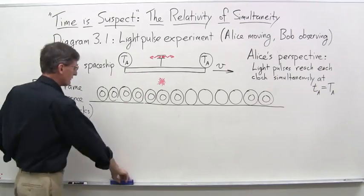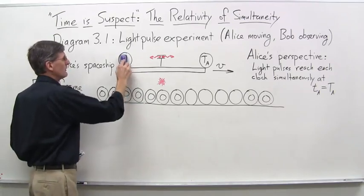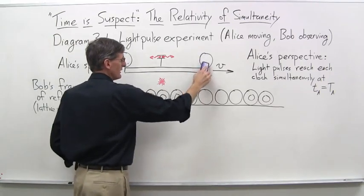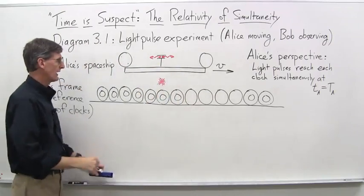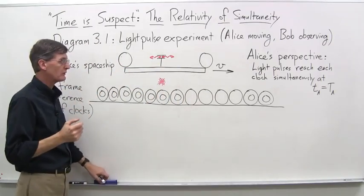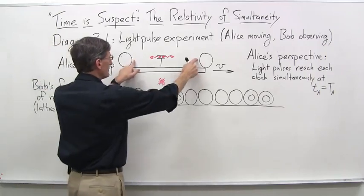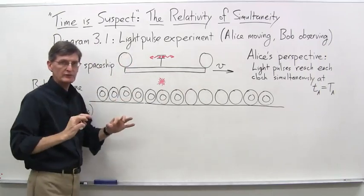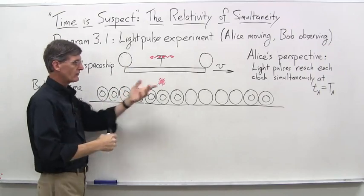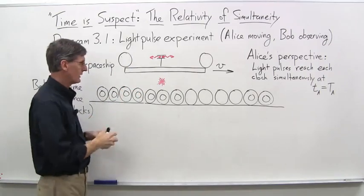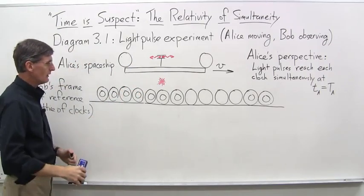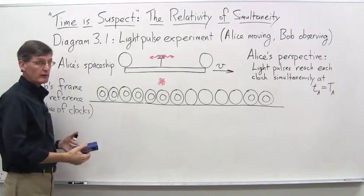And also for Alice, we'll erase the capital T sub A here, because that's later on for Alice when they actually hit. But the important thing to remember is, as far as Alice is concerned, when these two photons hit, they both hit simultaneously. And the reading on her clock is capital T sub A. So keep that in mind here.